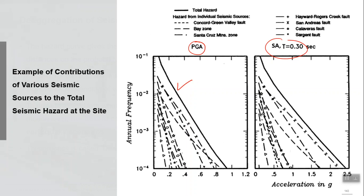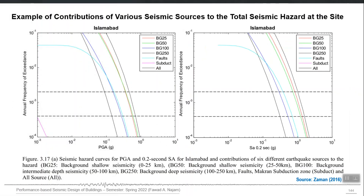SS and S1 are the spectral accelerations experienced by short buildings and long buildings respectively. So you may translate that information to conclude that your low-rise buildings are more vulnerable from one particular fault and high-rise buildings from another seismic source. This gives you an idea of what information you can get from the results of de-aggregation. This is an example of de-aggregation performed for different cities in Pakistan, where we were able to identify which source is contributing how much to the hazard at a particular city.